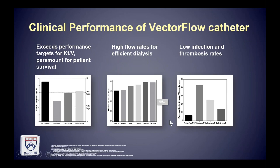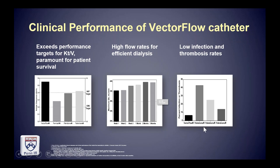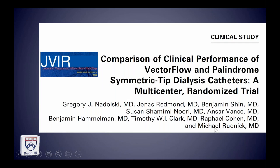Since it launched, clinical studies validating the computational fluid dynamics work have come out showing that KT over V — which is an independent predictor of patient survival in patients who depend on hemodialysis catheters — exceeds that of every other catheter on the market, as does flow, and the infection and thrombosis rates are the lowest. Ultimately, level one data from a randomized trial comparing it to the palindrome symmetrical tip dialysis catheter was published in JVIR.